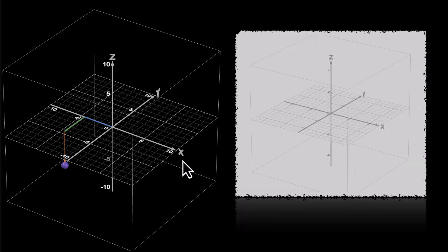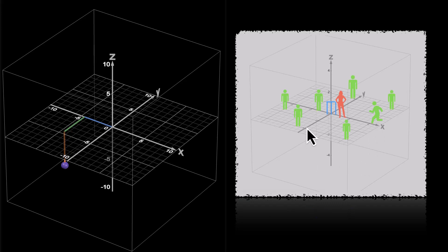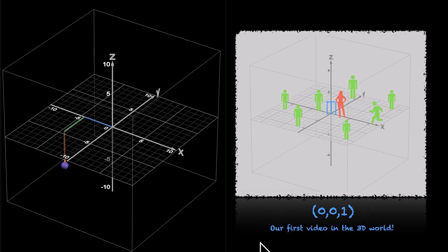Let's wrap this up and go back to our cricket game. We have our baller, this is where you were, and this was the wicket with the other players. Now we can see the world as it really is — it's a three-dimensional world. And the coordinates of the top of the wicket are (0, 0, 1), because we're only moving along the Z-axis. So that's (0, 0, 1). These are also the coordinates of our first video in the 3D world. See you in the next one.